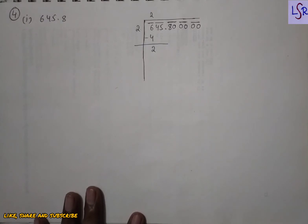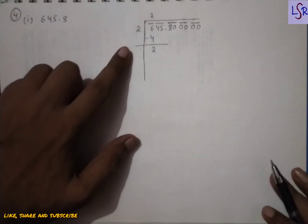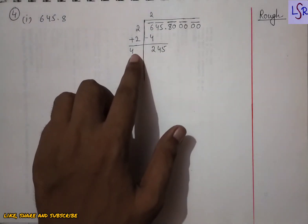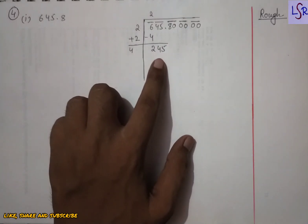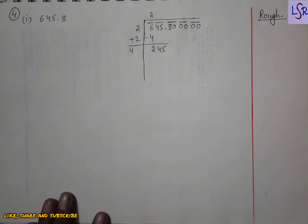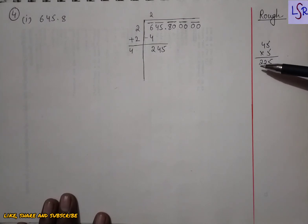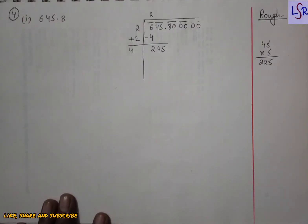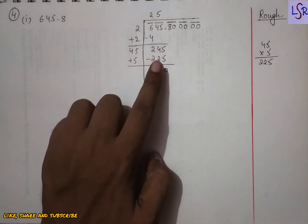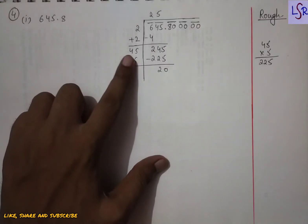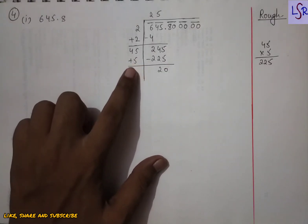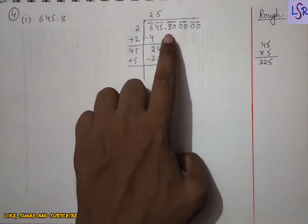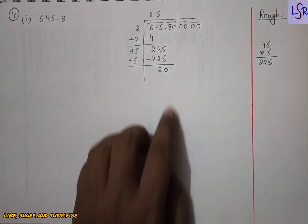We write 2 here and copy down 245. We write something and multiply by the same number: 45×5=225, which is just less than 245. Subtracting 225 from 245 gives 20. We copy down 50, and since the digits are after the decimal, we place a decimal sign in the answer.